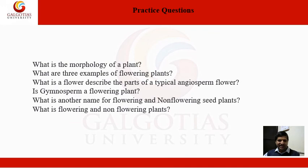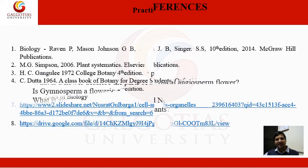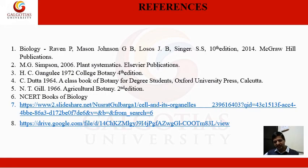Practice questions — dear students, these are some practice questions which are frequently asked: What is the morphology of a plant? What are three examples of flowering plants? What is a flower? Describe the parts of a typical angiosperm flower. Is gymnosperm a flowering plant? What is another name for flowering and non-flowering seed plants? A few references and links are also given; you can use these links to get more knowledge. Good luck.